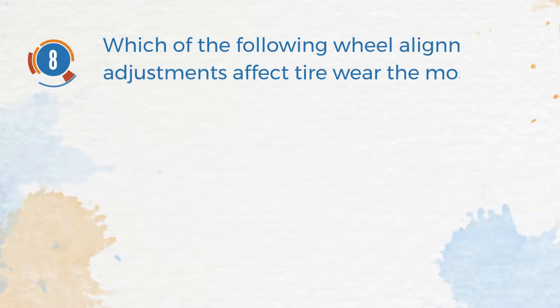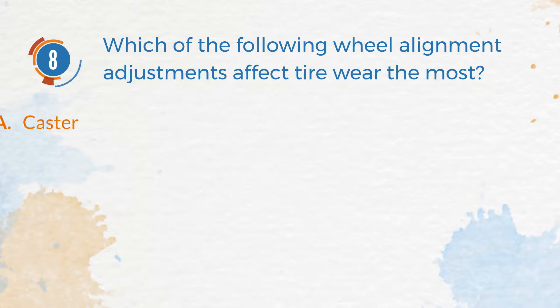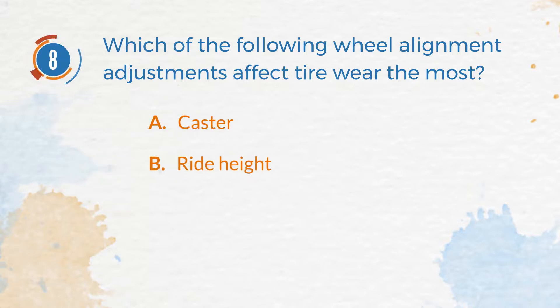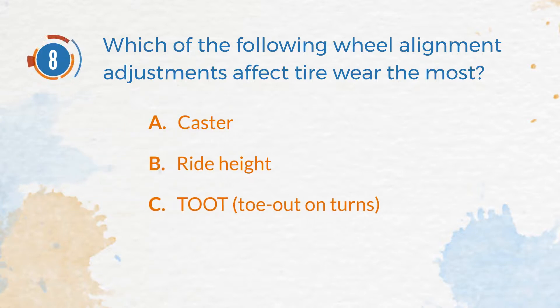Number 8. Which of the following wheel alignment adjustments affect tire wear the most? A. Castor. B. Ride Height. C. Toe Out on Turns. D. Camber.